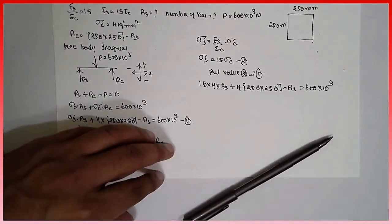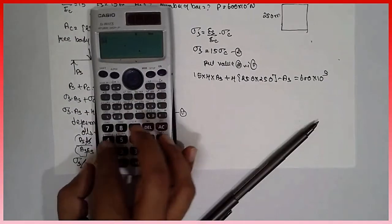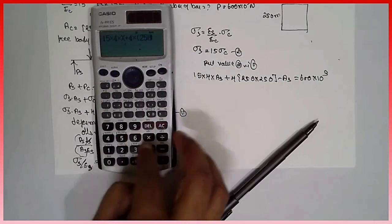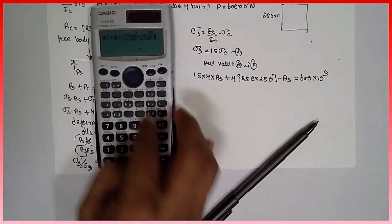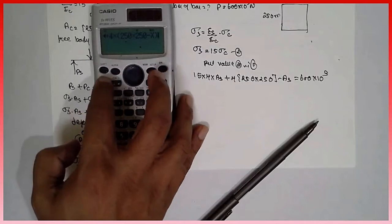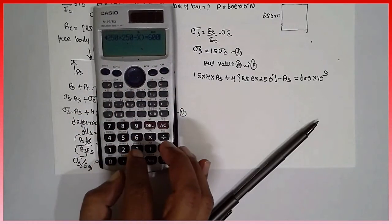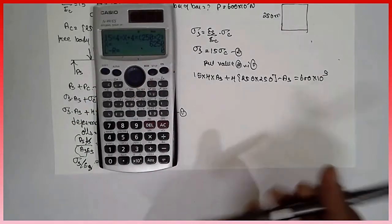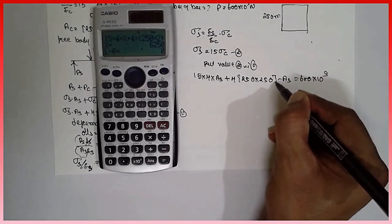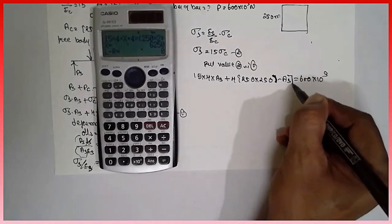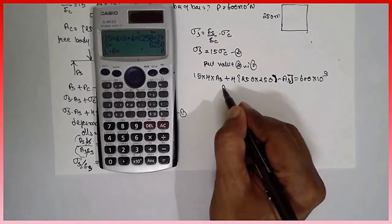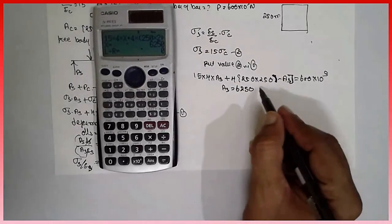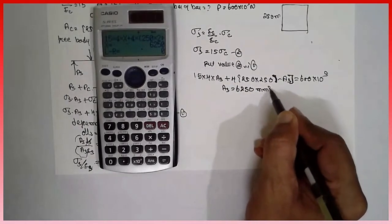Now with the help of calculator, you can find out directly. Here 15 into 4 into alpha x plus 4 into 250 into 250 minus alpha x is equal to 600 into 10 raise to 3. Shift solve is equal to. The answer is Es is equal to 6250 mm squared.